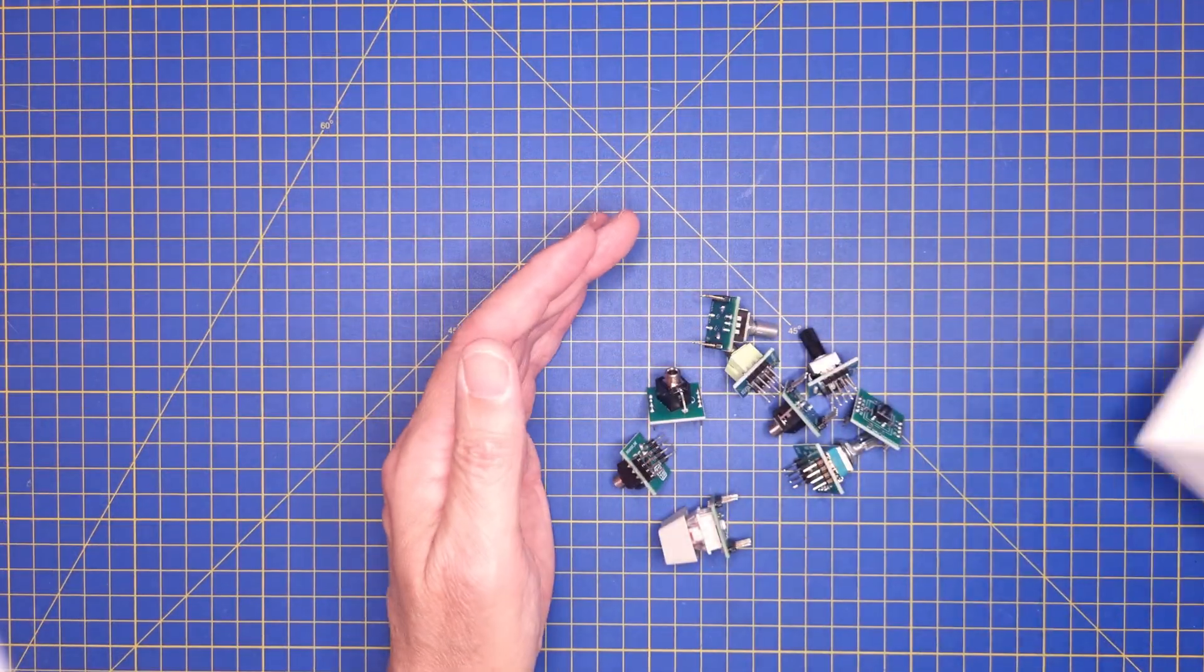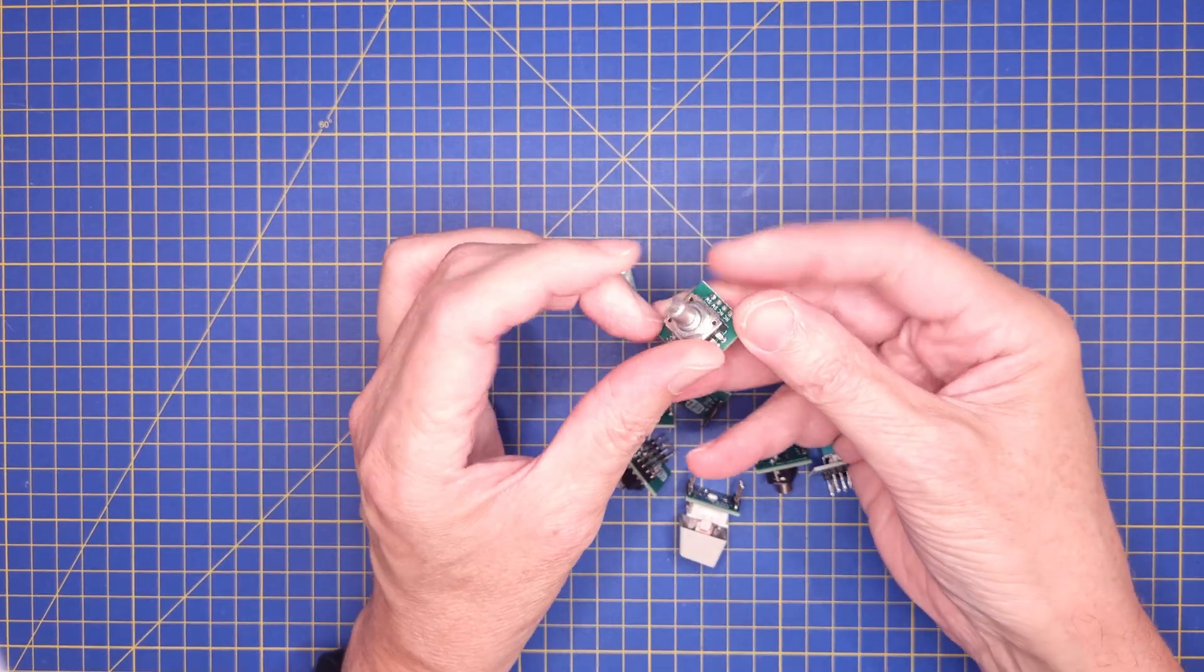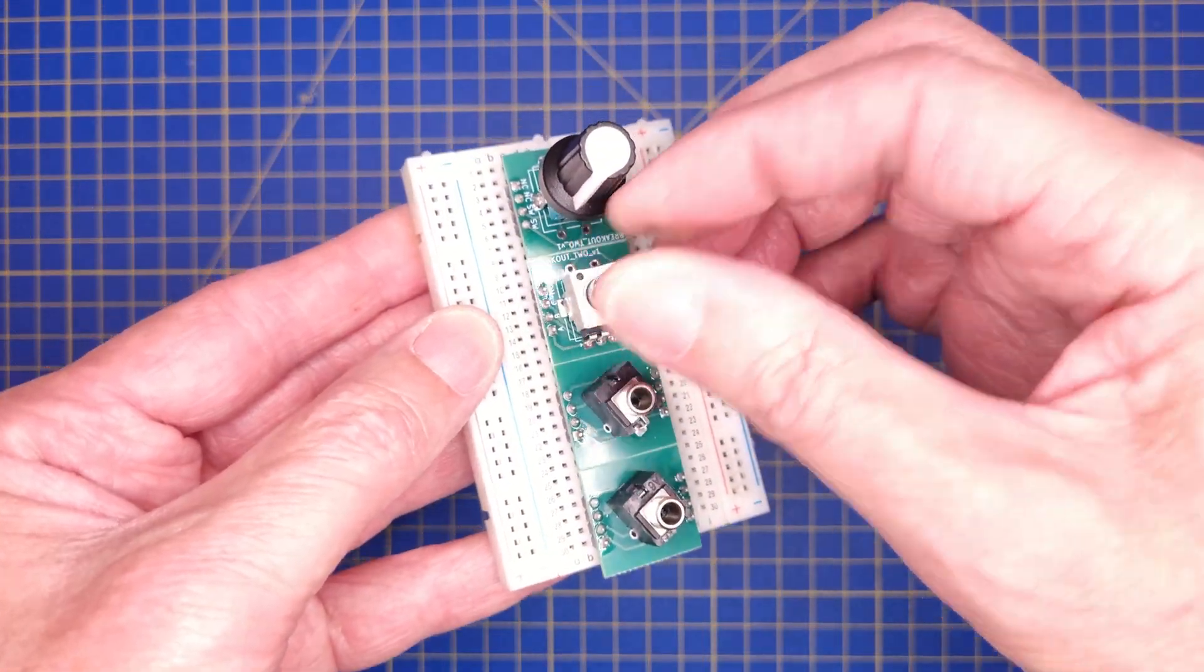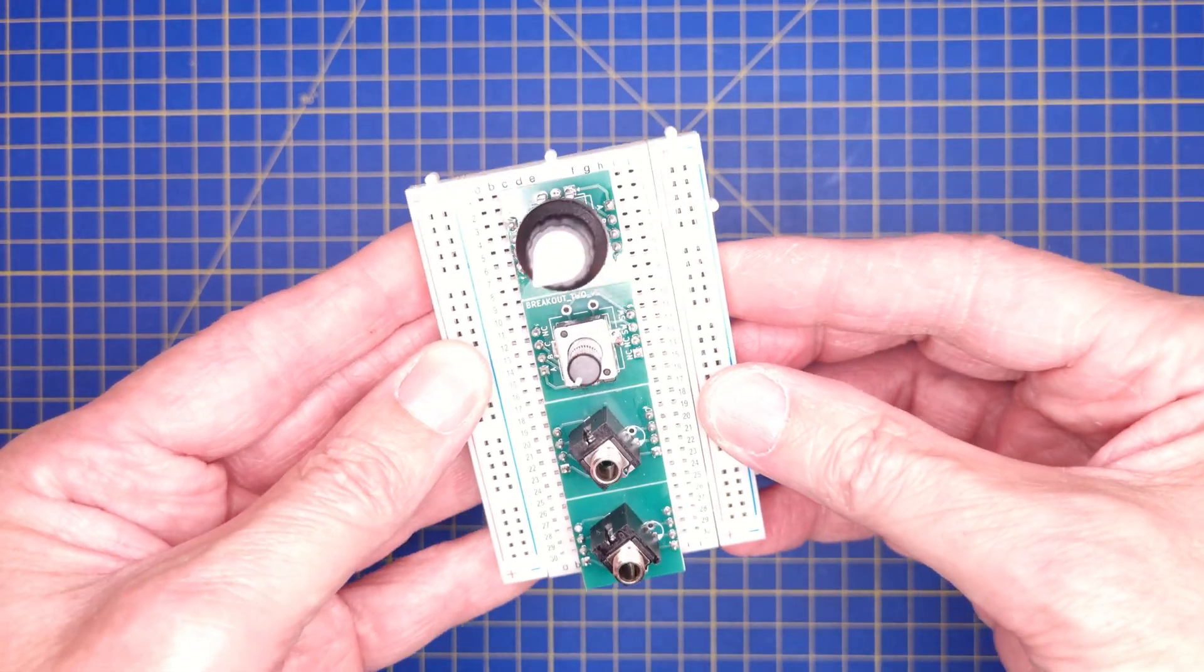But the simplest and cheapest solution is to make small breadboard adapters for all of those components that are giving you a hard time to fit on the breadboard. They will of course occupy some more space on the breadboard, but I use a couple of cheap breadboards just for that purpose.